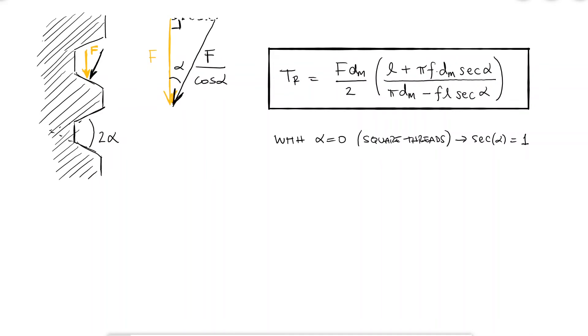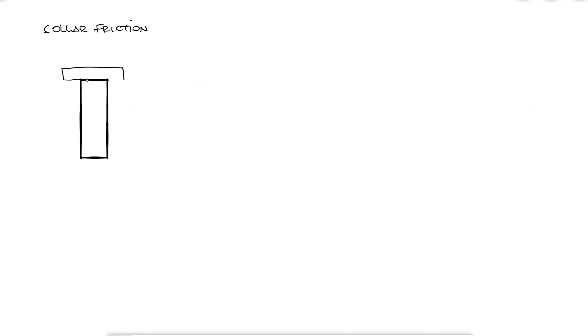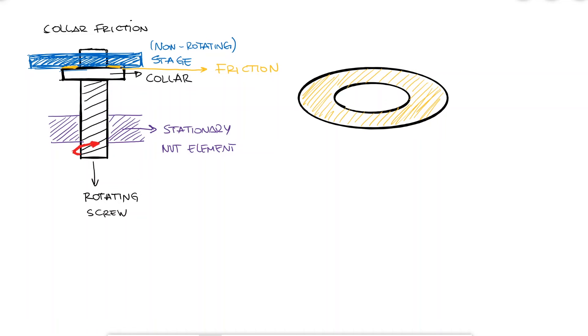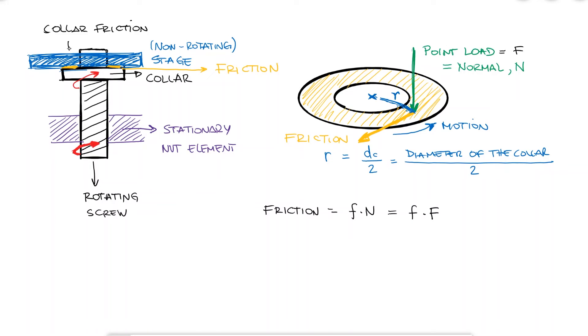One last component of power screws configurations is the use of a collar. When the screw is loaded axially, a thrust or collar bearing must be used between the rotating and stationary members in order to allow the screw to rotate without rotating the load. If the load, represented by the force f, is distributed along the surface of a collar, think of it as a ring, the point-load substitution of that distributed load would be located at a distance equal to the radius of the collar dc over 2. If the normal reaction n is equal to that force f, since the surface is perpendicular to the force, the friction force would be equal to the friction coefficient times the normal. The torque required to overcome the friction would then be equal to that friction force times the radius. And of course, the friction coefficient can be different for the collar, so we name it f sub c.